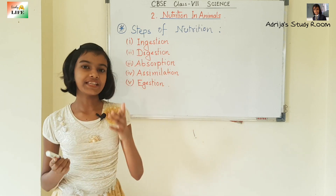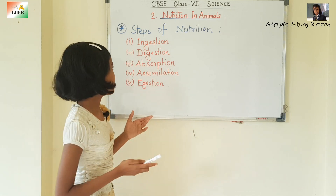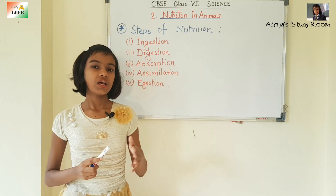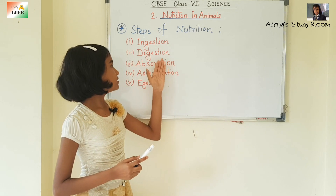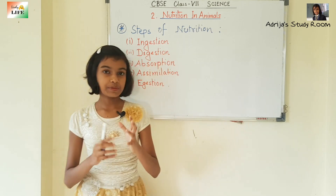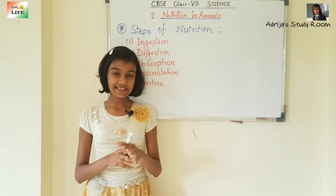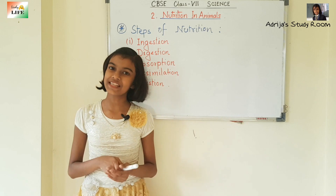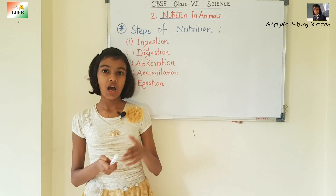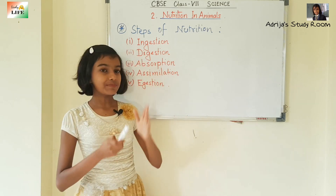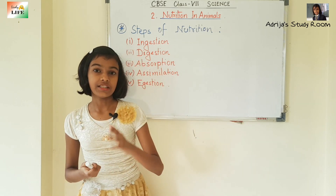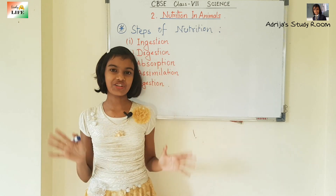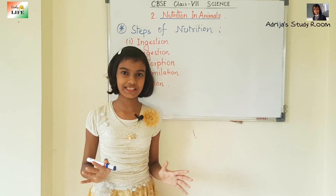Now let's move to the third step: absorption. The simpler substances produced by digestion are absorbed by the blood. This process is known as absorption. After absorption, the simpler substances are sent to different parts of the body.